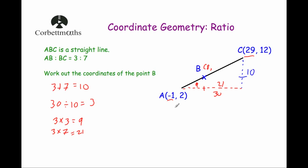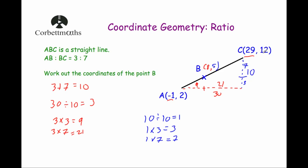So 3 plus 7 is 10, and 10 divided by 10 gives us 1. Then 1 times 3 equals 3, and 1 times 7 equals 7. So the vertical distances are 3 and 7. Point B is 3 higher than point A, so 2 plus 3 is 5. And going up another 7 gets us to C. So the coordinates of point B are (8, 5).